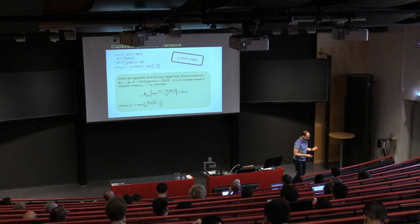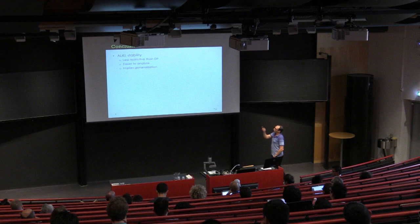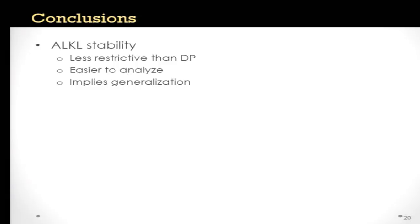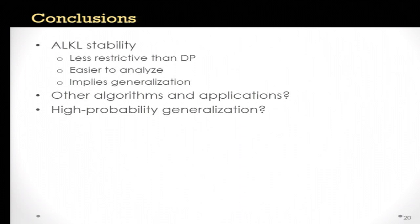In conclusion, they have introduced the notion of average leave-one-out KL stability. It is less restrictive than differential privacy but has the same nice properties, and is also quite a bit easier to analyze. One limitation is that they don't know whether it implies high-probability generalization as differential privacy does — that's a natural open problem — and they also don't have a counterexample. It would be interesting to see other algorithms and applications that use this notion.